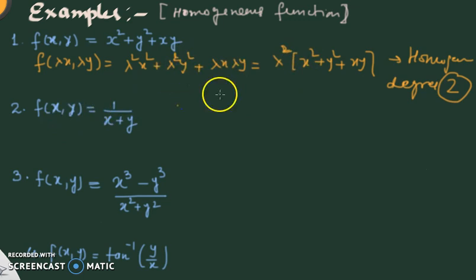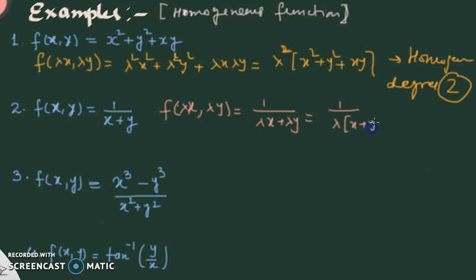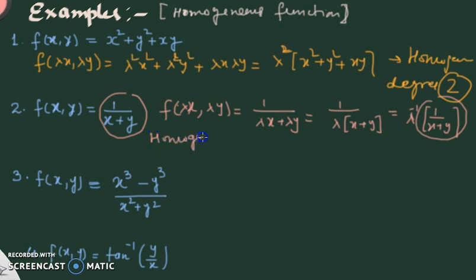Example 2 is a rational expression. Replacing x by λx and y by λy: the numerator becomes λx + λy = λ(x+y), and we can write this as λ⁻¹ when moved to the denominator. So we get λ⁻¹·f(x,y), meaning the function is back. It is a homogeneous function of degree −1.